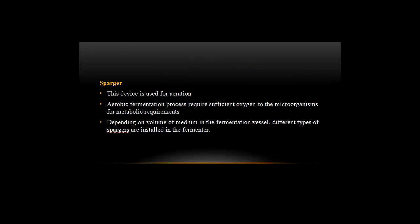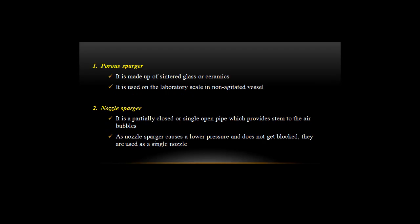Sparger: this device is used for aeration. Aerobic fermentation processes require sufficient oxygen for microorganisms' metabolic requirements. Depending on the volume of the medium in the fermentation vessel, different types of spargers are installed in the fermenter. Porous sparger: it is made up of sintered glass or ceramics and is used on the laboratory scale in non-agitated vessels.